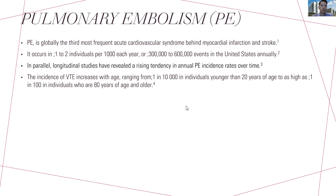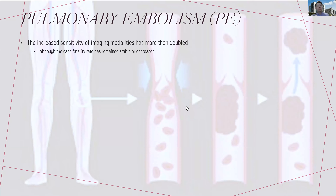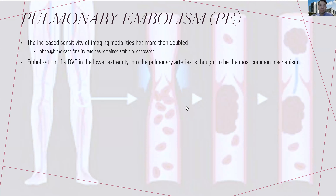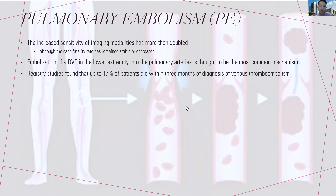The incidence also increases with age — from one in ten thousand in younger patients, it can go up a hundred times more when the patient is over 80. The increasing sensitivity of imaging makes it easier to detect nowadays; however, the case fatality rate still remains the same. Embolizations from deep vein thrombosis are still the most common cause of pulmonary embolisms. Registry studies found that nearly 20% of patients die within three months of diagnosis after venous thromboembolism or PE.